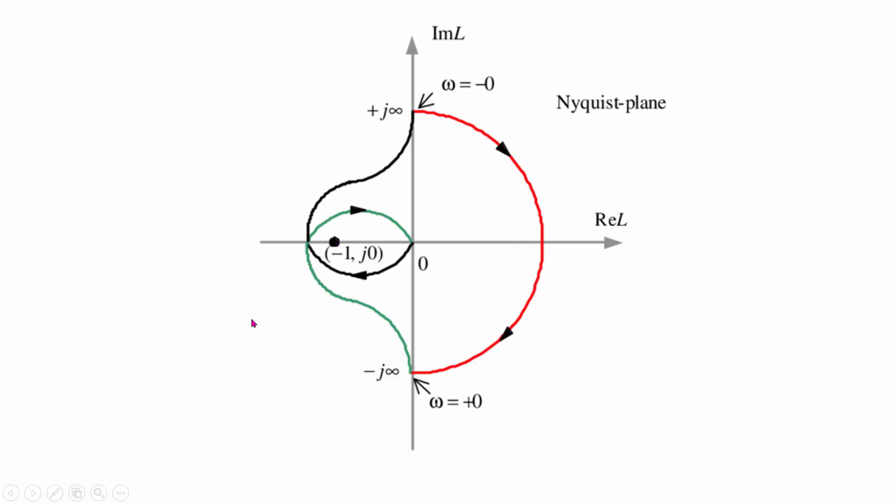While for this plot, you will observe that there are two encirclements. If you start from this point and go along the plot in this manner, suppose that you are standing at the point minus 1, you observe this particular point to be moving 2 times 360 degrees. So if you stand at this particular point and observe the point moving, you will find that this point moves 360 degrees from here to here, then again a 360 degree from here to here. So this will make two encirclements about point minus 1.